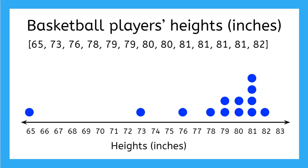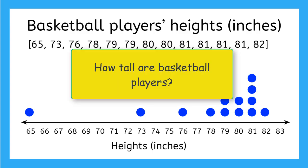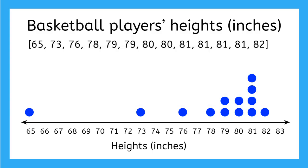In the lesson Statistical Questions and Dot Plots, we had asked the question, how tall are basketball players? And we collected data and made a dot plot to help us analyze our data. By looking at the peaks and clusters on our dot plot, we were able to come up with a general answer to our question. We said most basketball players are about 80 inches, but what if we want a more specific answer?